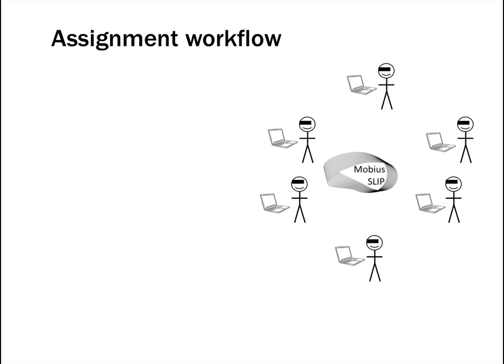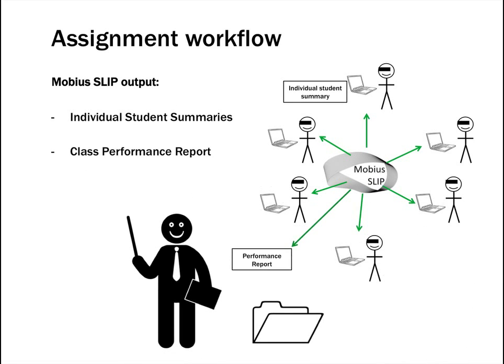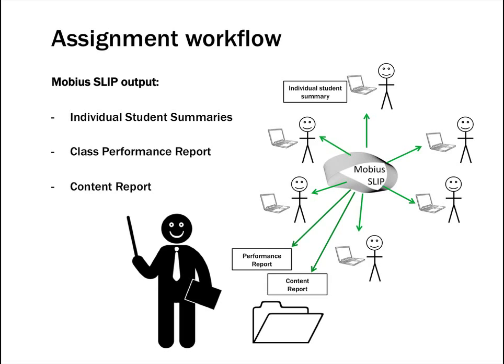The Mobius SLIP outputs a variety of reports and statistics for both students and instructors. The students receive individual summaries, and the instructor receives overall class performance reports. These include a content report with detailed descriptions of each essay, all the feedback, all the scores — including inter-observer reliability scores — and other assessments of how the group's rankings are actually being carried out.